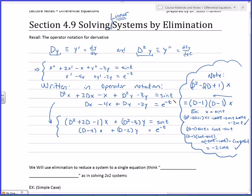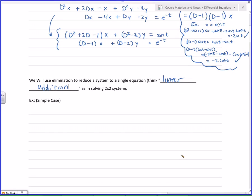So then, when we do things like elimination in 2x2 systems, you're typically multiplying one equation by something and another equation by something so that when you add them up, you cancel out one of the variables. Well, what we are going to do is we're going to think linear addition, but we're going to use it to reduce a differential equation system to one variable.